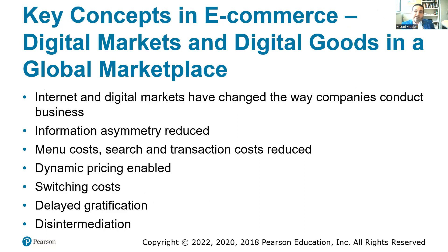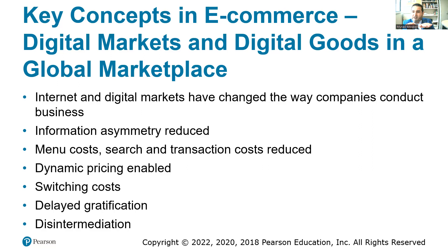The internet and digital markets have changed the way companies conduct business. Now they have a combination of e-commerce and brick and mortar — for example, Walmart has physical stores and also Walmart.com, where they are trying to compete with Amazon. Information asymmetry is also reduced in e-commerce. Asymmetry means one party — the buyer or seller — has more information than the other and thus more bargaining power. E-commerce reduces that asymmetry, making information more symmetric for both parties.